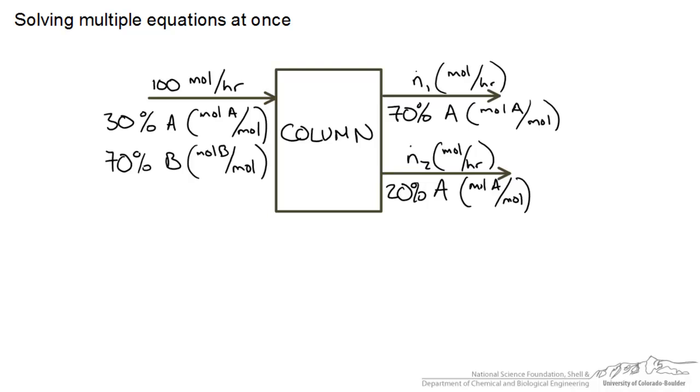I have provided you with a common material energy balance for a column where we have two species entering a column and two streams with different compositions coming out.